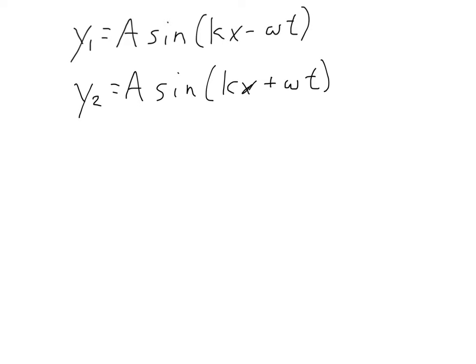Now if we choose to add these two waves together, again, we're going to have to use some trig identities, but you can prove on your own and see that the total waveform here has an interesting solution where we get 2 times the amplitude, kind of like what we saw before, sine kx, and multiplied by cosine ω t.